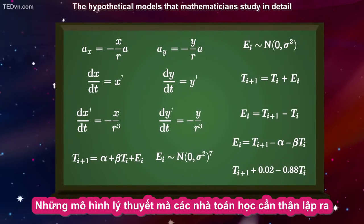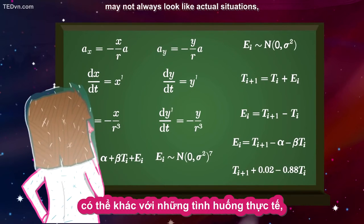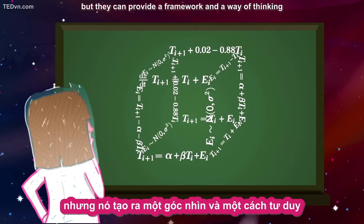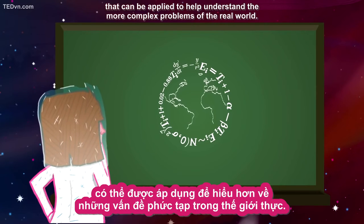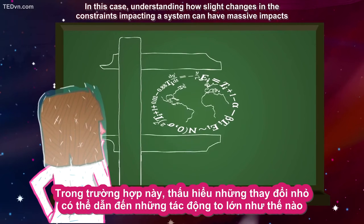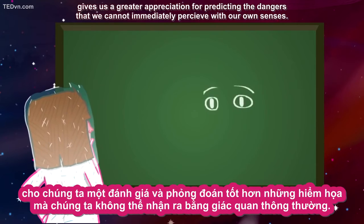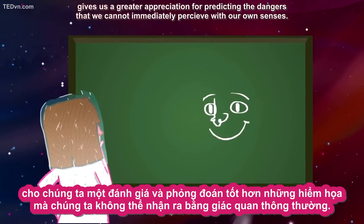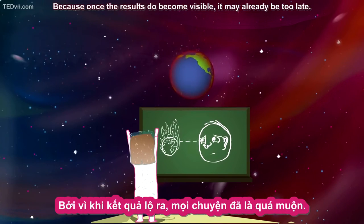The hypothetical models that mathematicians study in detail may not always look like actual situations, but they can provide a framework and a way of thinking that can be applied to help understand the more complex problems of the real world. In this case, understanding how slight changes in the constraints impacting a system can have massive impacts gives us a greater appreciation for predicting the dangers that we cannot immediately perceive with our own senses, because once the results do become visible, it may already be too late.